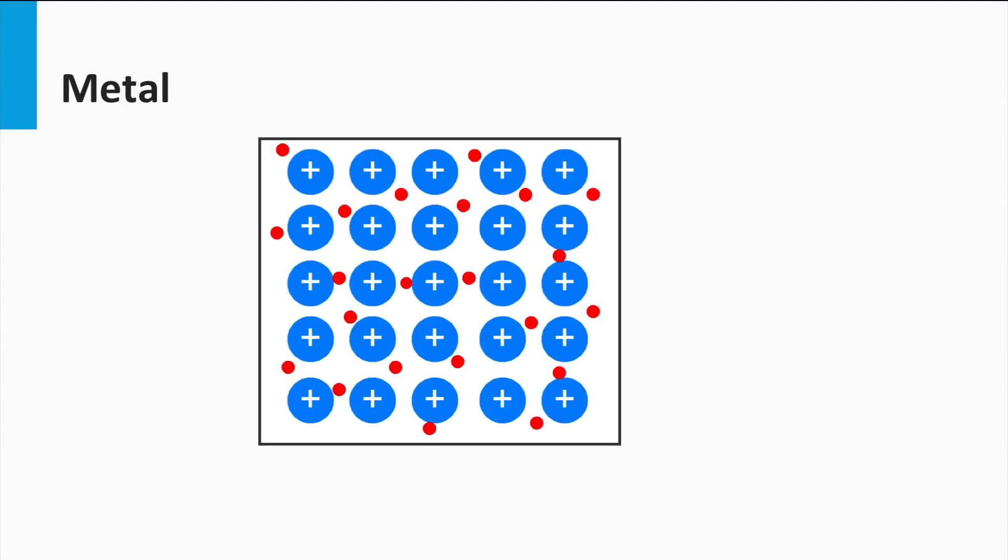We know that metals can conduct electricity very well. The origin of the high conductivity of metals is based on the fact that the outer electrons of the atoms in a metal are weakly bound. This results in an ocean of free mobile electrons in the material, indicated by the red dots.